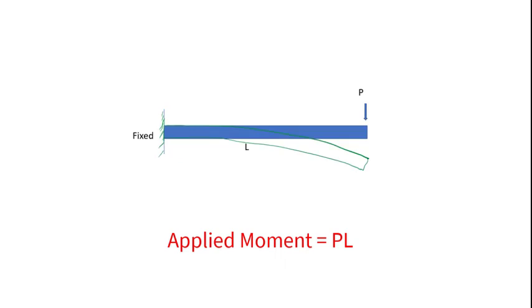Now for example in a cantilever beam the net load times its lever arm at the end will give you the applied moment at that concern section. Now this is not the bending moment. Now the bending moment is the reactive moment developed to resist the applied moment at the section of concern.